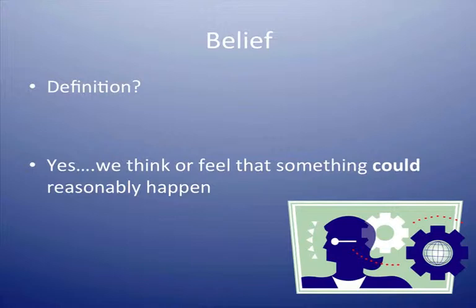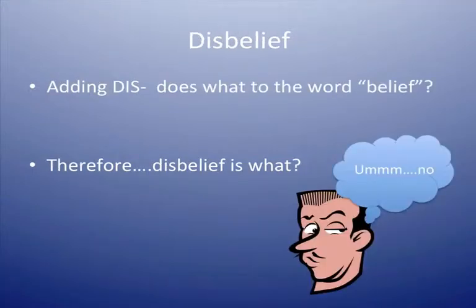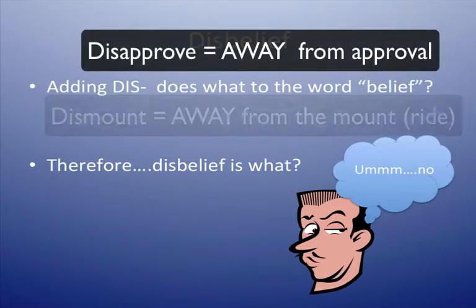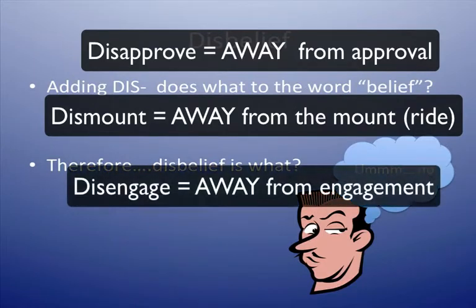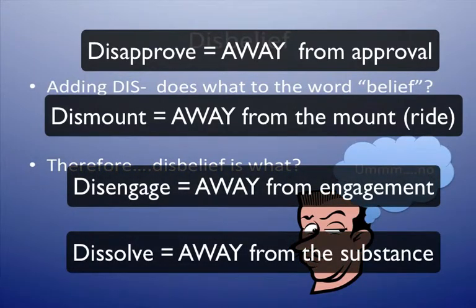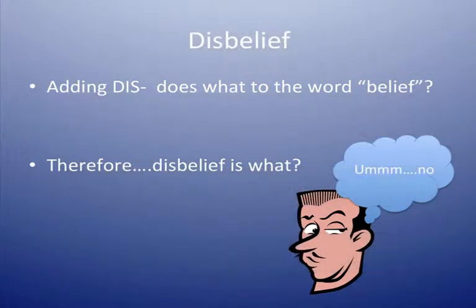If we add the prefix 'dis-' before 'belief,' dis means away, not, or from — and therefore we've created the word 'disbelief.' That prefix 'dis-' meaning away or from comes in forms like disapprove, dismount, disengage, or dissolve. All of those prefixes mean something is going away from whatever it is attached to. So instead of something we could think or feel could happen, we now have 'disbelief,' which means we do not think or feel it could happen.